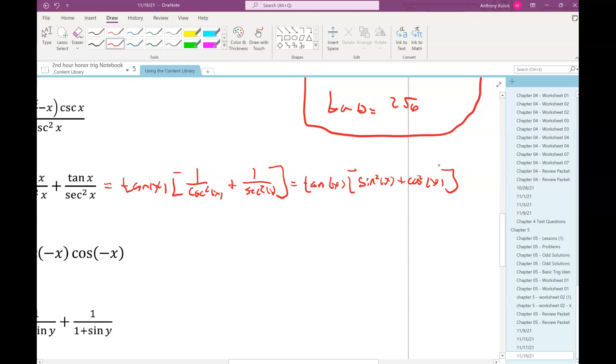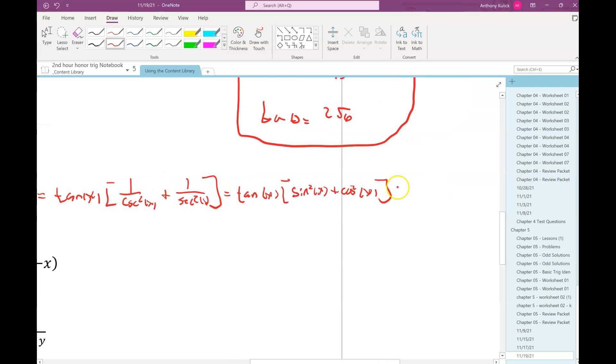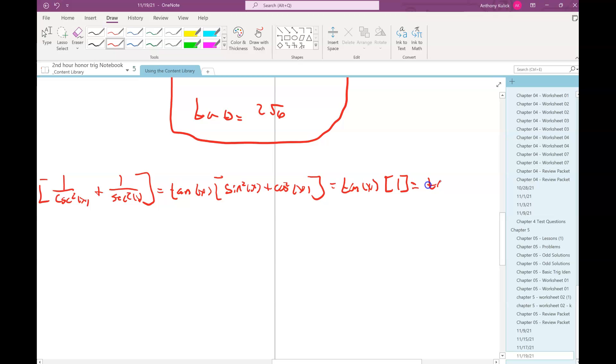So, one over cosecant squared is sine squared, and one over secant squared is cosine squared. And I see sine squared plus cosine squared. That's just one. So, I just have tan times one, which is tan. And that's the quickest way to do that. If you had tried to do something different, this one could have gotten very messy. I think it was the worst one in here. If you had tried to turn everything into sines and cosines and grind through making common denominators and stuff, this got pretty messy pretty quick.